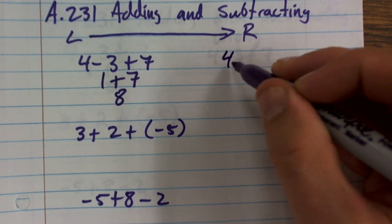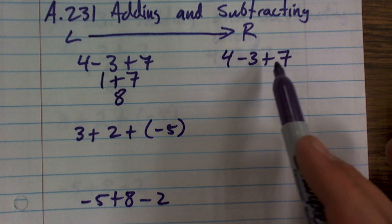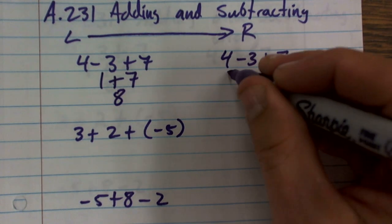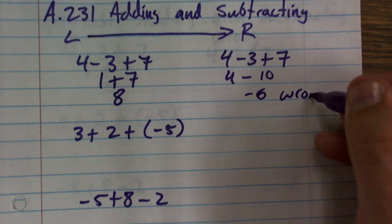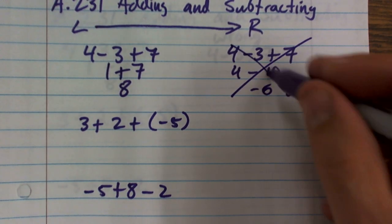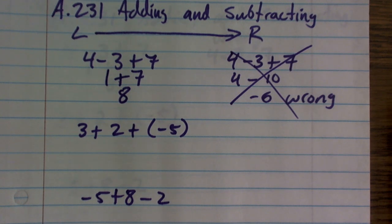A big mistake a lot of students make is they don't carry the sign with the 3 and they just add 3 plus 7, which would be 10. 4 minus 10, which is negative 6, which is wrong. So be careful with that. If you follow the rules of going left to right, you'll be okay.